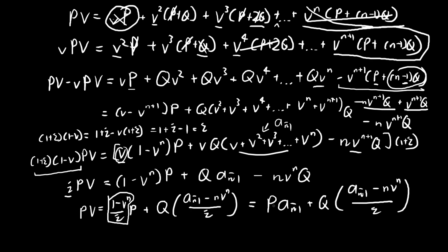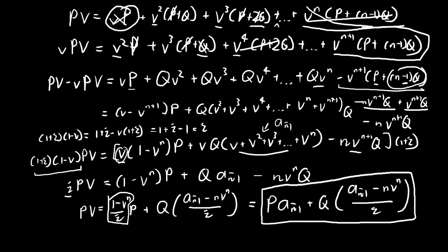This is the formula for the present value of an increasing annuity. You do have to memorize this one — it will come in handy during your exam. There are no shortcuts. Hopefully this proof will help with your memorization. I hope this helps. See you next time. Bye.